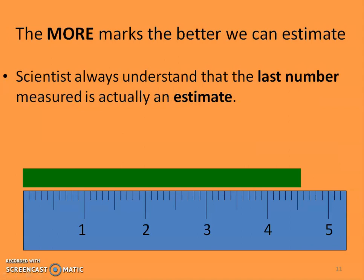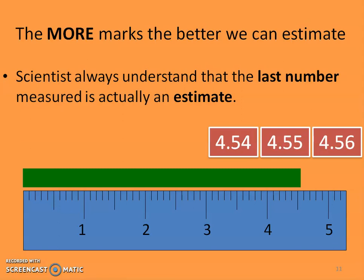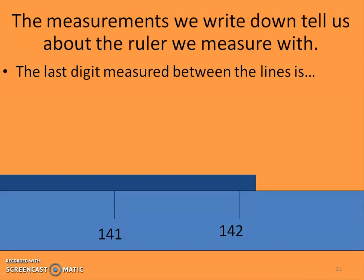However, the more marks, the better we can estimate, right? So scientists always understand that again, that last number measured is actually an estimated number. So now this is the same green line, but a different ruler. The ruler now has many more marks on them. So now between the four and the five, we have ten marks. So pause, see if you can come up with a value that you would give this. Now I apologize, I did not include the centimeters, right? Because it always needs a unit, but we're really just dealing with that estimating of that last number. So now you should have been able to figure out that that green line was between the 4.5 and the 4.6. So I would, again, I would accept any one of these three numbers, but I still only want one. Anytime you make a measurement, you have to estimate that last digit, but I only need one of them.